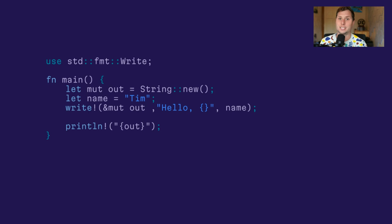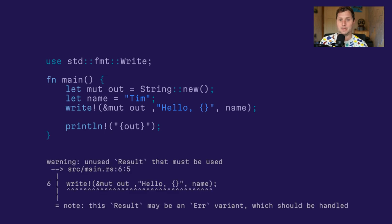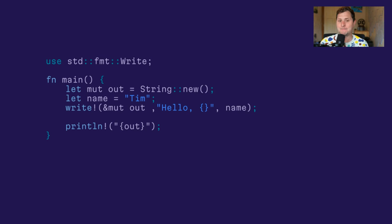It turned out there was still a problem — I would get this compile error saying 'this returns a result which may be an error variant, which should be handled.' I was like, okay, that seems weird. What do I do?